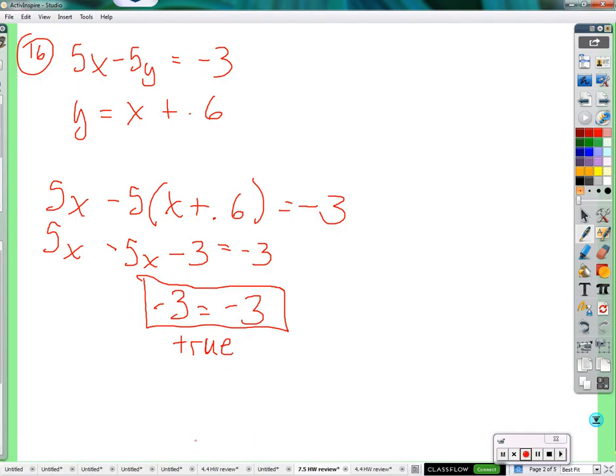So I'll give you the long story short first. If you wind up getting the variables canceled out in these systems of equations, and wind up with a true equation, something true—something that's not true would be like negative 3 equals 5, negative 3 does not equal 5. But negative 3 does equal negative 3. And since that's true, we can say that this has infinite solutions.